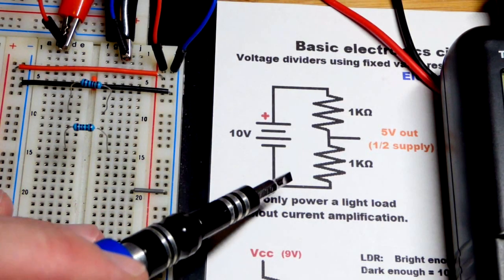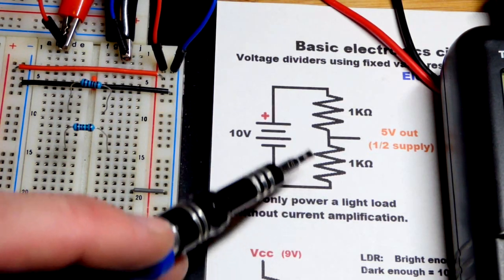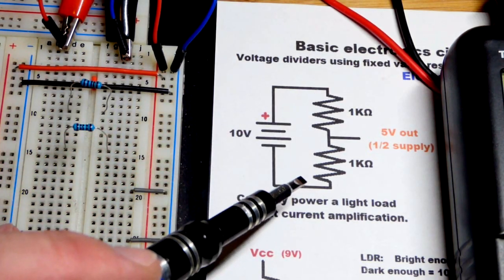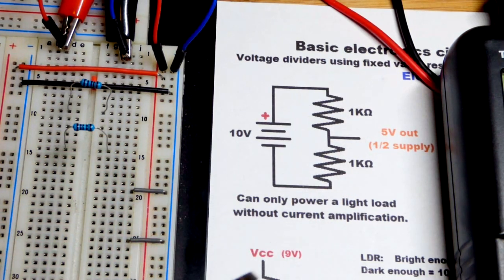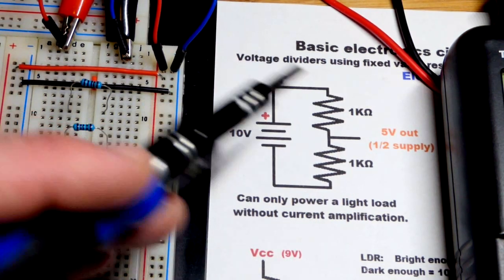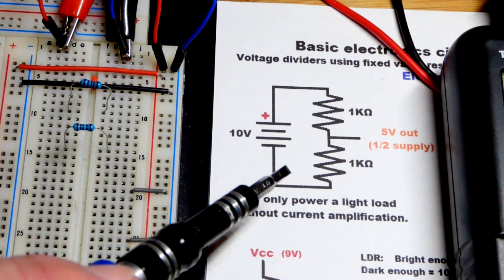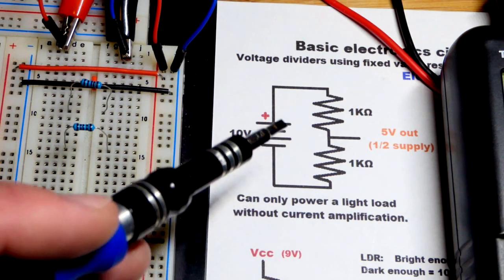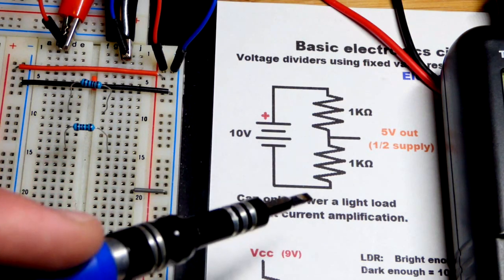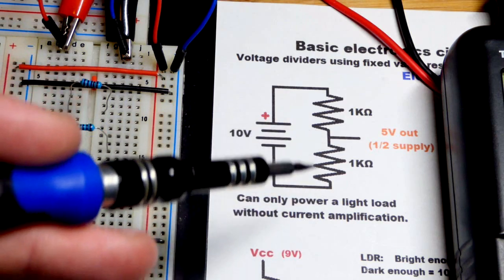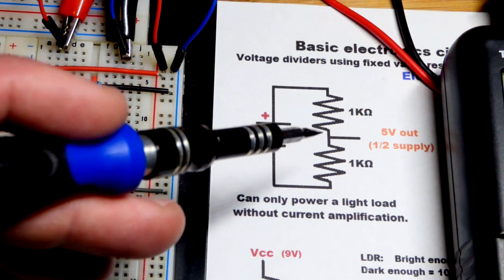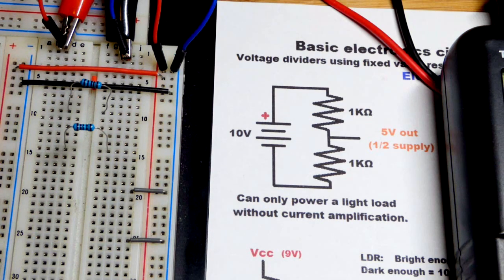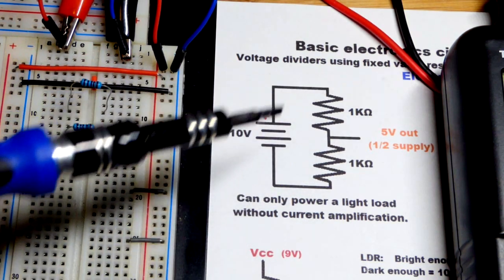The next circuit fragment we're going to look at is the voltage divider. You use resistors to divide up voltage, and we'll look at that in more detail coming up. In earlier videos we had semiconductors — they blocked a certain voltage and that same voltage built up across them. Resistors aren't as straightforward, but in any case, we have this circuit that we're going to build first.